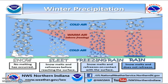The picture shows winter precipitation. It normally has four forms: snow, sleet, freezing rain, and rain. Snow means no melting has occurred during the drop to the ground. Sleet means snow melts and refreezes before reaching the surface. Freezing rain means snow melts and freezes on contact with the surface. Rain means snow melts and does not freeze.